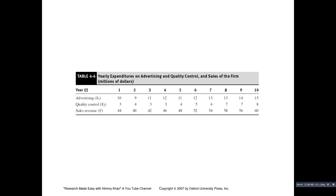Now I switch over to the multiple linear regression model. In the last model there were two variables: sales revenue as the dependent variable and X which was advertising. Now I introduce another variable into that table — quality control. There are now three variables: advertising expenditure designated as X1, quality control as X2, and sales revenue as the dependent variable. This data is for 10 years and all three variables are measured in terms of millions of dollars.